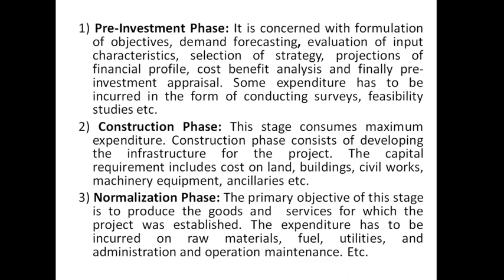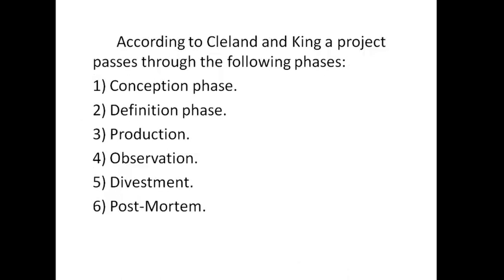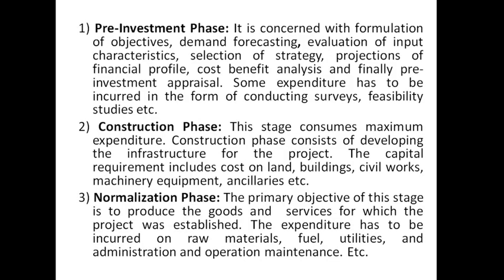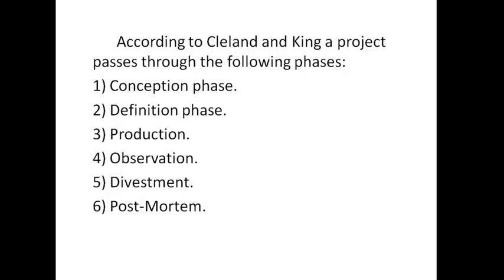In the normalization phase there is operational expenditure. The primary objective of this stage is to produce goods and services for which the project was established, including raw material, fuel, utilities, administration and operation maintenance. The three phases are: pre-investment, construction and normalization. Some sources also describe six phases: conception, definition, production, observation and disinvestment.